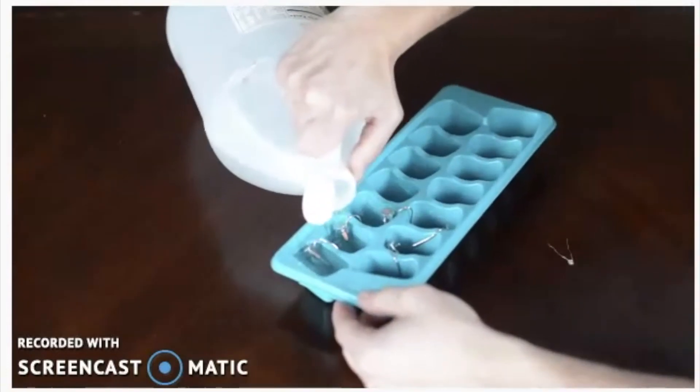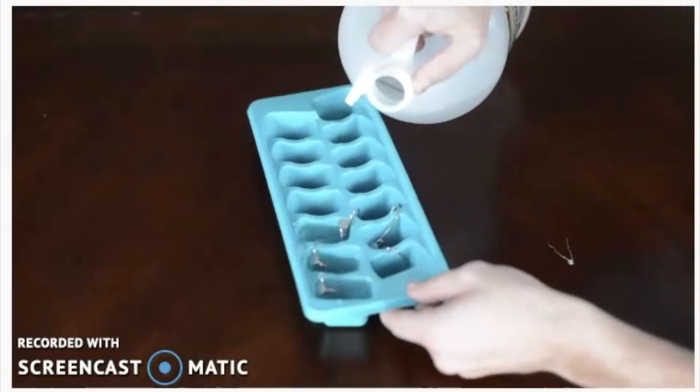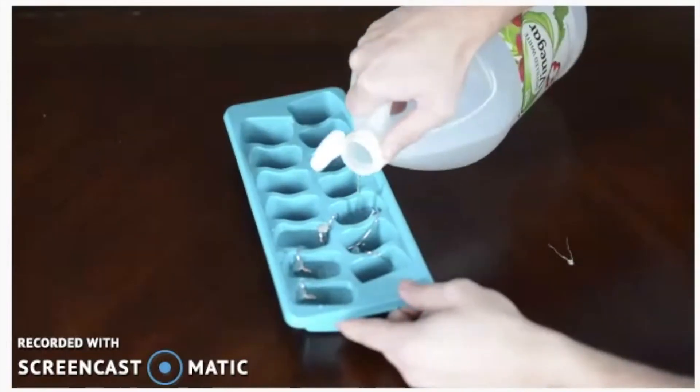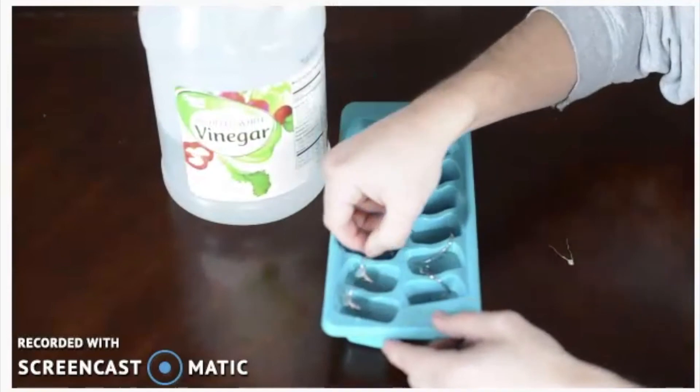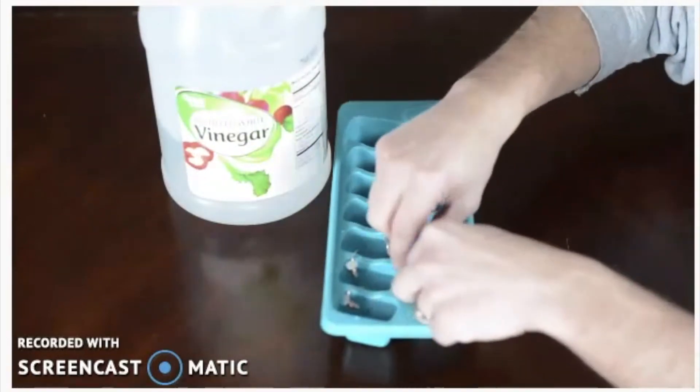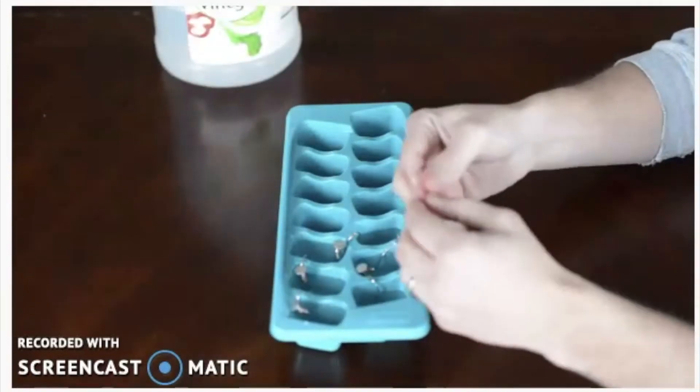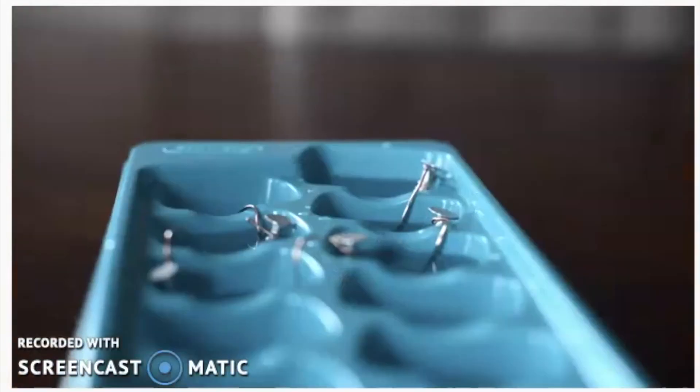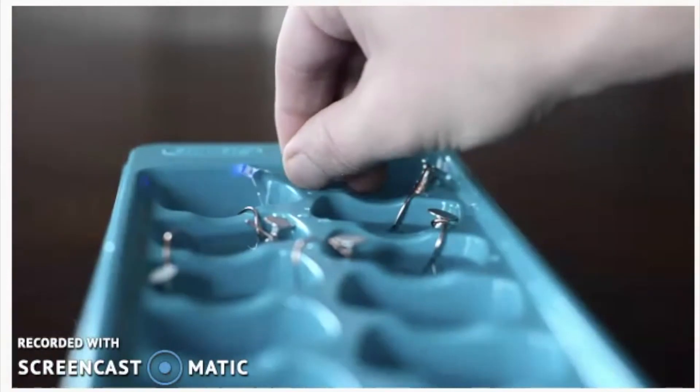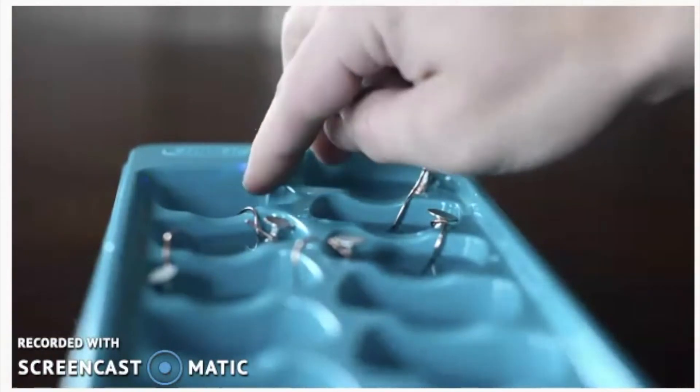Once they're all filled in, you pour the vinegar into each well of the ice cube tray, and that is what is going to create your circuit. Then all you do is you put your LED light in and it should turn on. And here you can see the light a little bit better. Pretty cool, right?